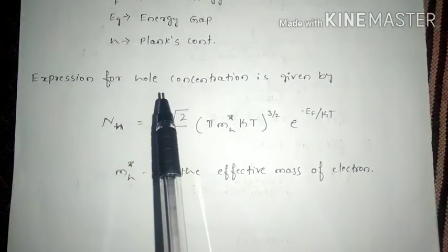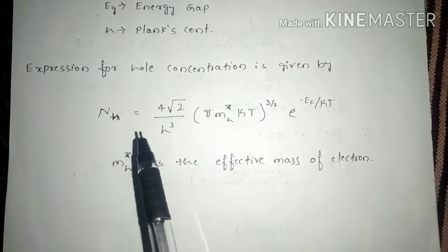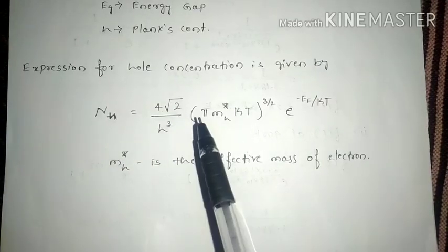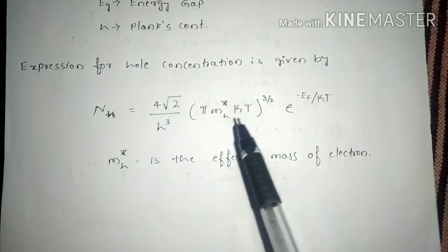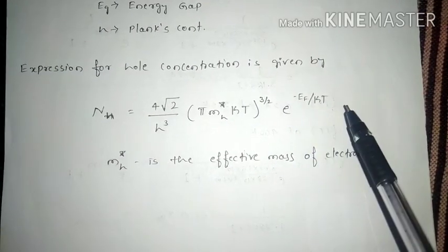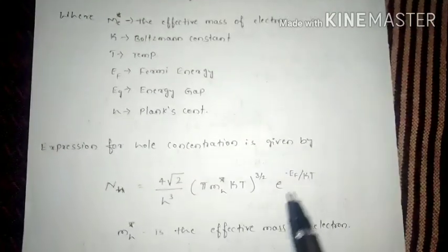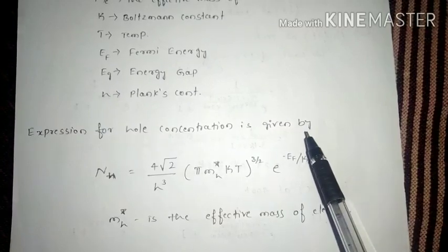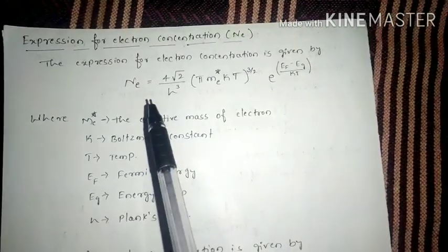Similarly, in semiconductors there will be positive charge carriers which we call holes. The expression for hole concentration is given by: NH equals 4√2 divided by H³, times (π · mH* · K · T)^(3/2), times e^(−EF / KT). Where mH* is the effective mass of the hole. All remaining terms are the same as in the electron concentration expression. These are the expressions for hole concentration (positive charge carriers) and electron concentration (negative charge carriers).